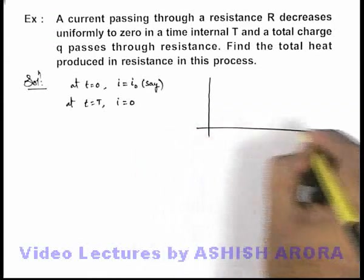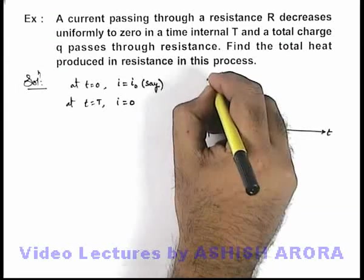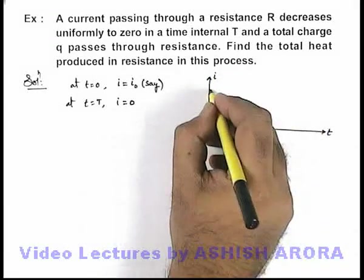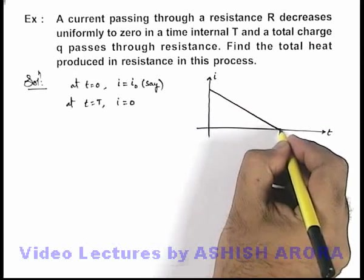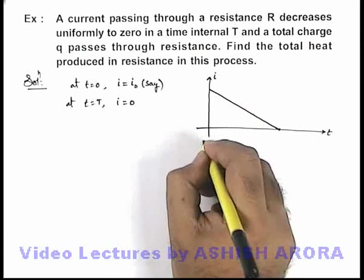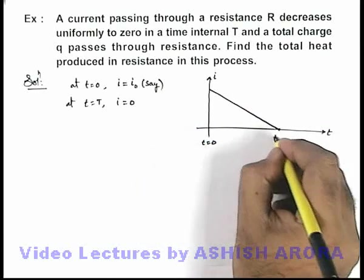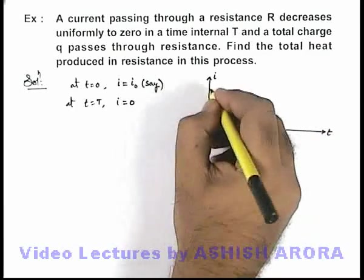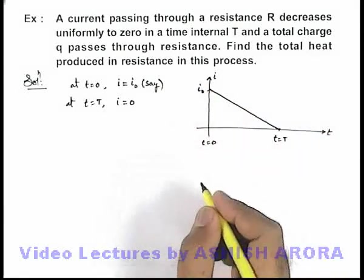And we plot a variation curve of current with time. Here you can see, as it is given that it is uniformly decreasing to zero in time t equal to zero to T, then we can say at t equal to zero the value of current was i_0.